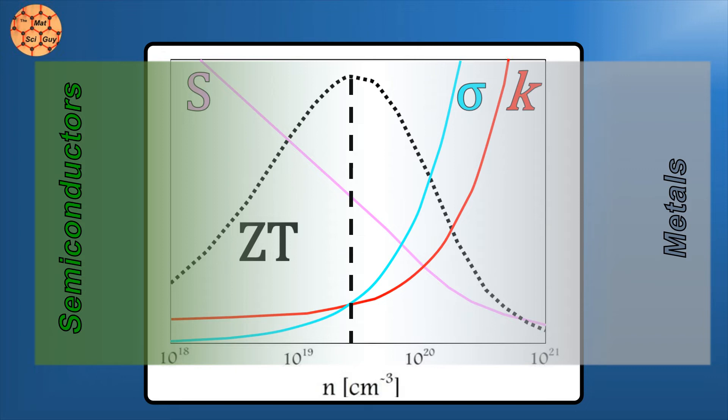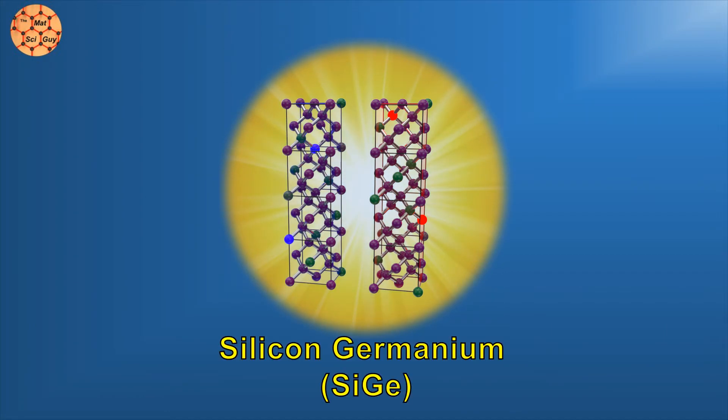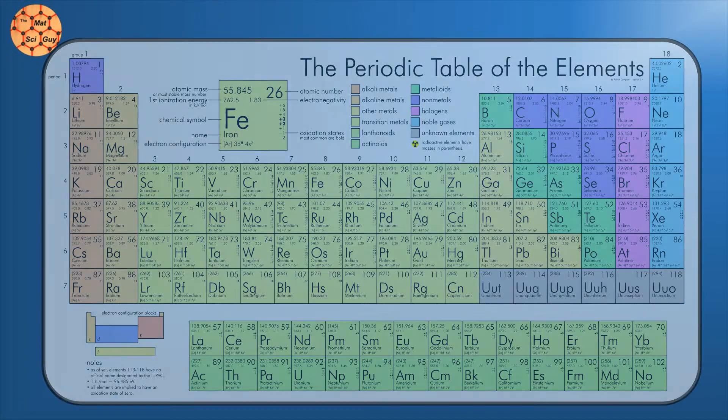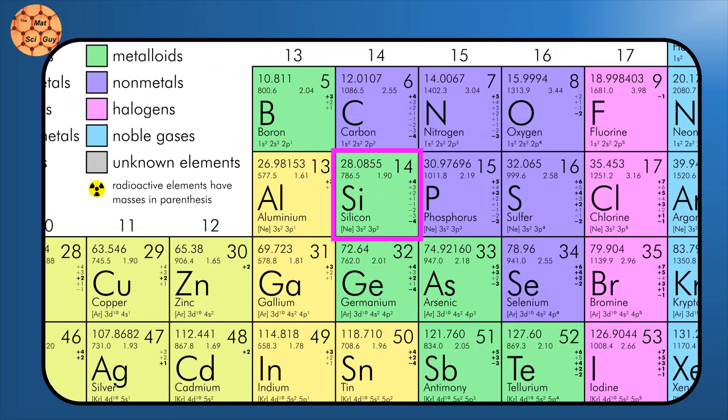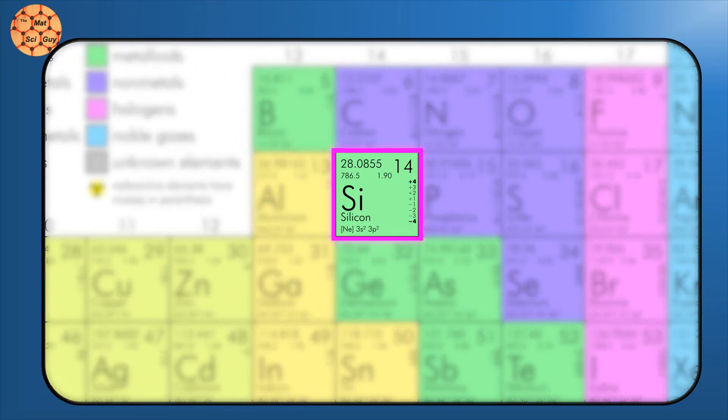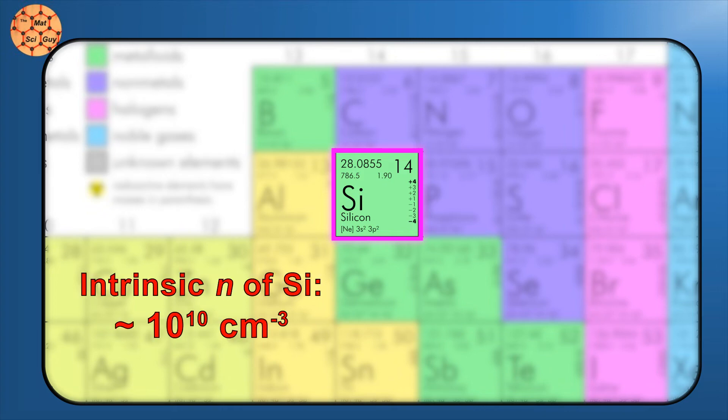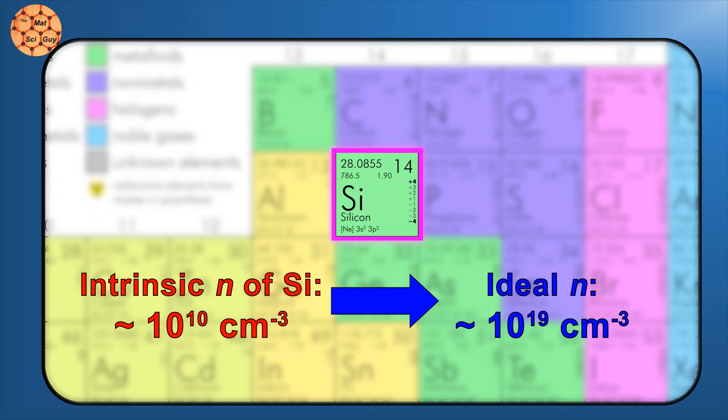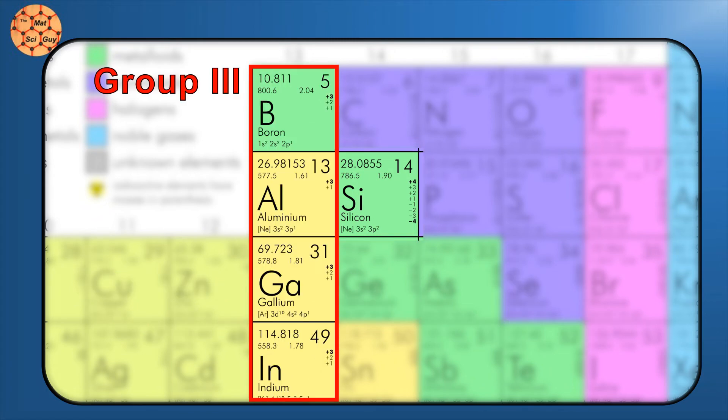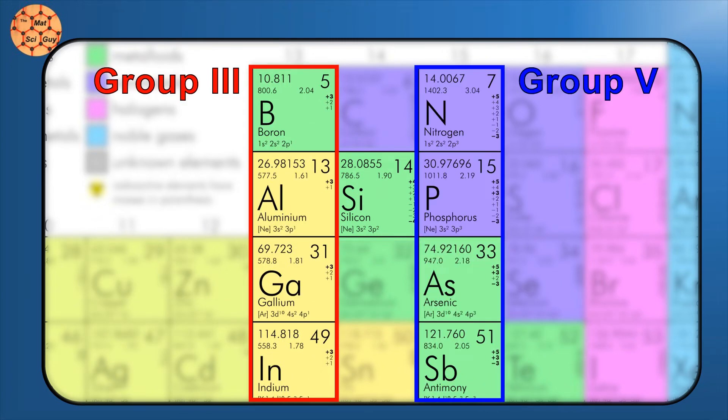Now we can finally introduce the main character in this saga, silicon germanium. Whenever we talk about semiconducting materials, silicon is usually a good place to start. Part of why it's so ubiquitous in the semiconductor industry is that it's incredibly stable and versatile. To achieve the ideal carrier concentration we talked about earlier, we need to add a lot of extra electrons or extra holes to silicon. This can be done by substituting group 3 or group 5 elements, a process called doping.